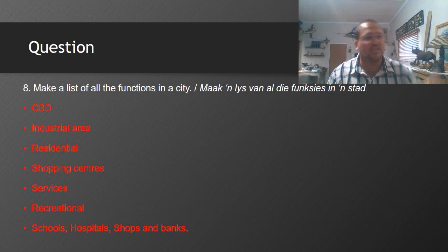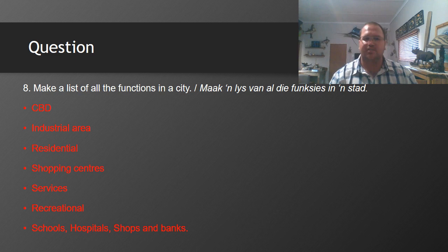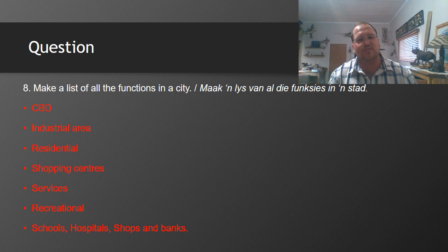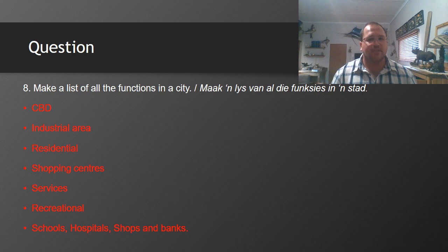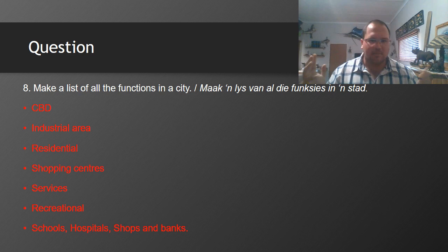Question eight: list all the functions in a city. We get the CBD, industrial areas, residential areas, shopping centers, services, and recreational areas. Examples of services include schools, hospitals, shops, and banks. We are less likely to find these in rural areas — for example, in Pongola where I am now there is only a small shopping centre with a Pick and Pay and three other shops, whereas in Pretoria we have bigger centres like Menlyn with far more shops.